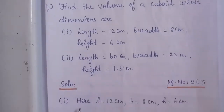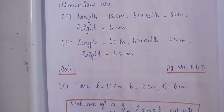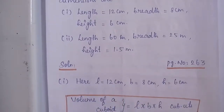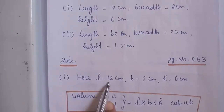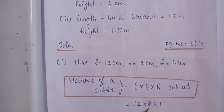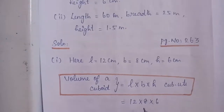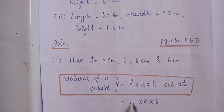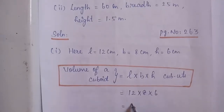Solution: Here L is equal to 12 cm, B is equal to 8 cm, and H is equal to 6 cm. We know the volume of a cuboid formula is length into breadth into height cubic units. So which is equal to 12 into 8 into 6. We know 6 sixes are 36, 7 sixes are 42, 8 sixes are 48. So 48 into 12 we get the value 576 cm cube.